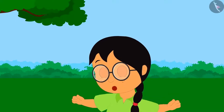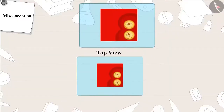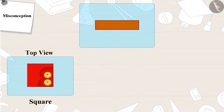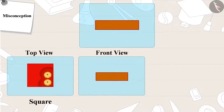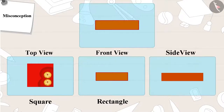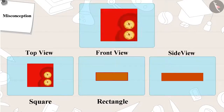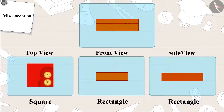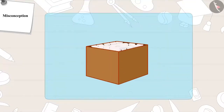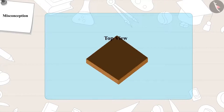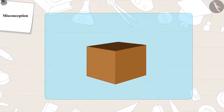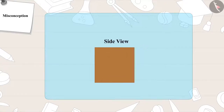This is a wrong answer. A sweet box is a square in top view, but in front view it is a rectangle, and even in side view it is a rectangle. The correct answer is a box of chalks. The box of chalks is a square in top view, front view, and side view.